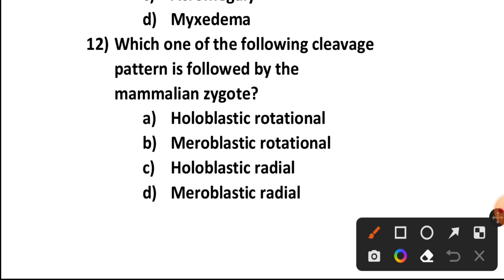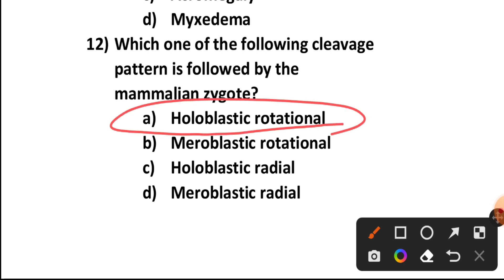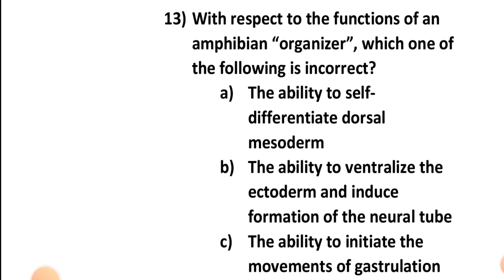Question number twelve: Which cleavage pattern is followed by the mammalian zygote — holoblastic rotational, meroblastic rotational, holoblastic radial, or meroblastic radial? It is holoblastic rotational. Option A is the correct answer.